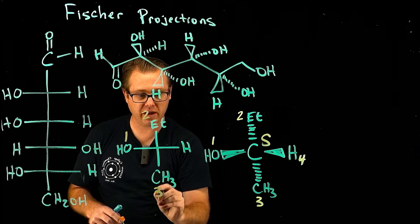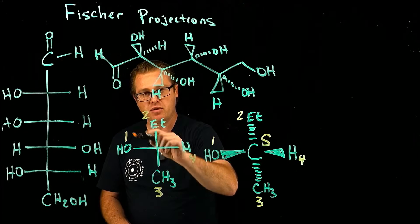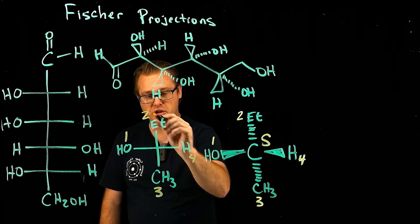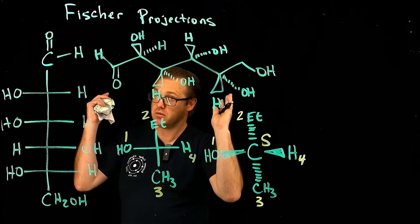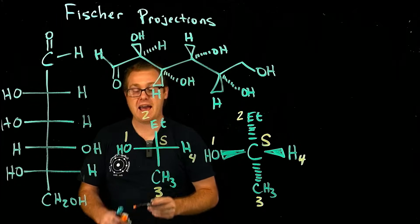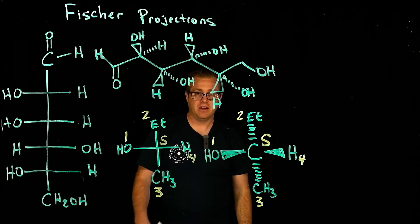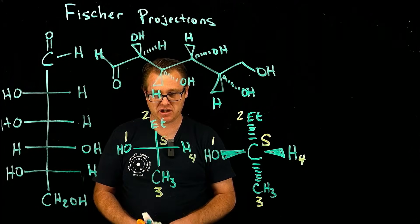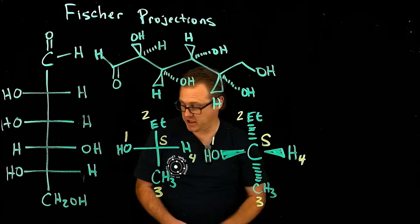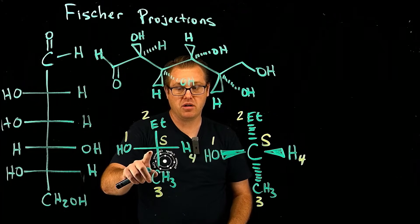You can do that same process directly in the Fisher projection. One, two, three — that's R — but the H and OH are wedges, so the lowest priority is a wedge, and we take the opposite: that would be S. That is one of the most important things to remember about Fisher projections.